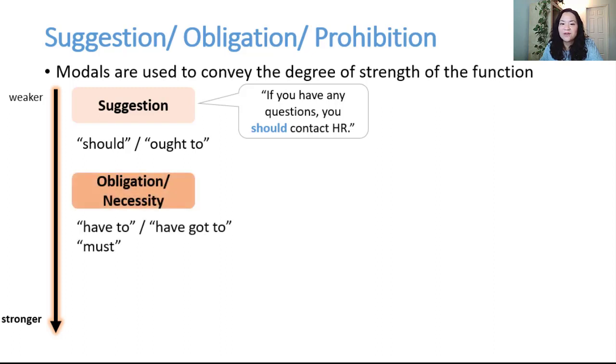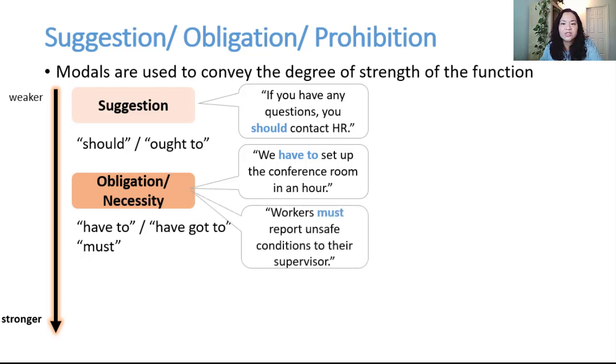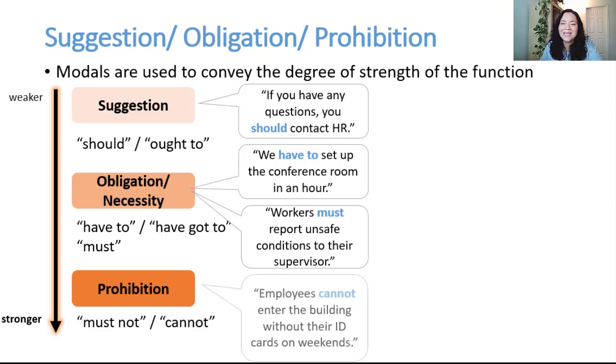The next level would be have to or have got to to express obligation or necessity. We have to set up the conference room in an hour. Another note is that have got to is a little less formal. Finally, must is one of the strongest ways to express obligation or necessity. Workers must report unsafe conditions to their supervisor. And strangely enough, when we want to express a prohibition that is something you are not allowed to do, we can use both must not and cannot, although cannot is not quite as formal as must not. Employees cannot enter the building without their ID cards on the weekends.